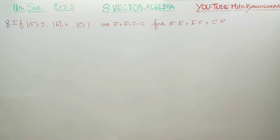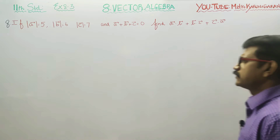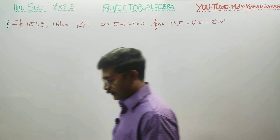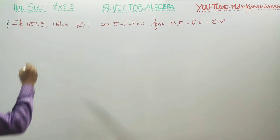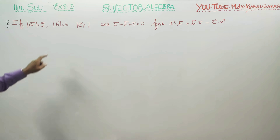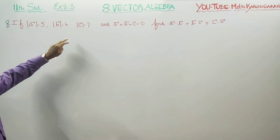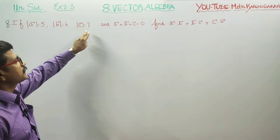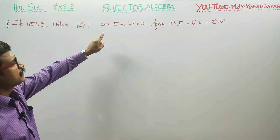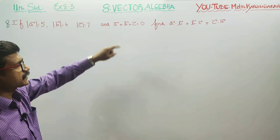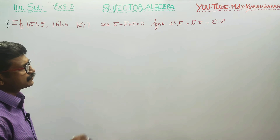Dear 11th standard students, in exercise 8.3, sum number 8: if magnitude of A is equal to 5, magnitude of B is equal to 6, magnitude of C vector is equal to 7, and A vector plus B vector plus C vector is equal to 0, find the required value.